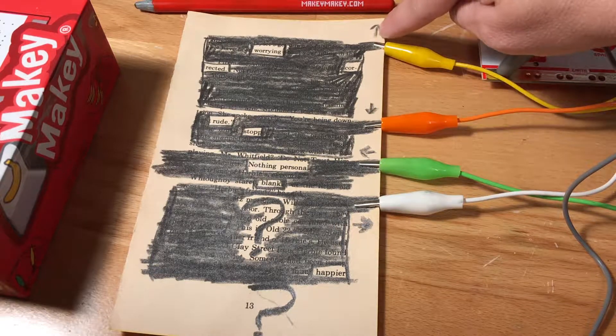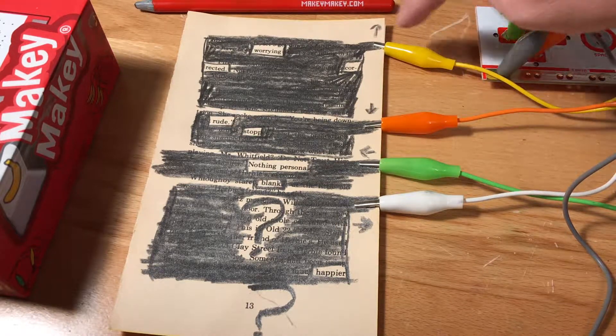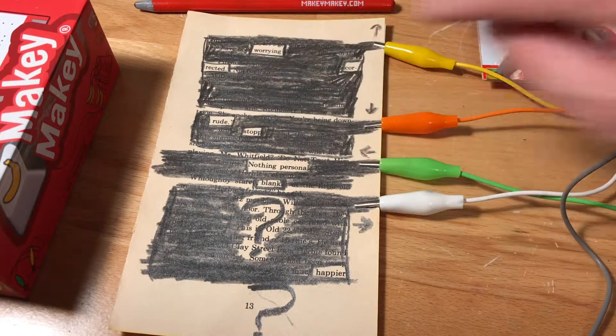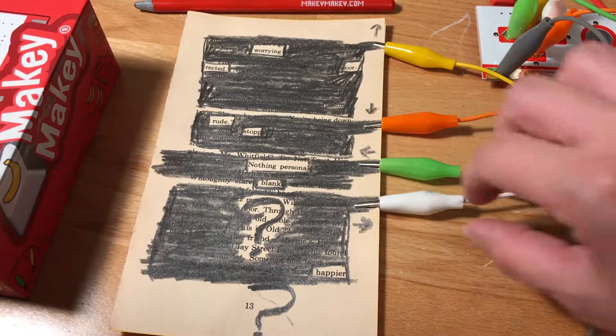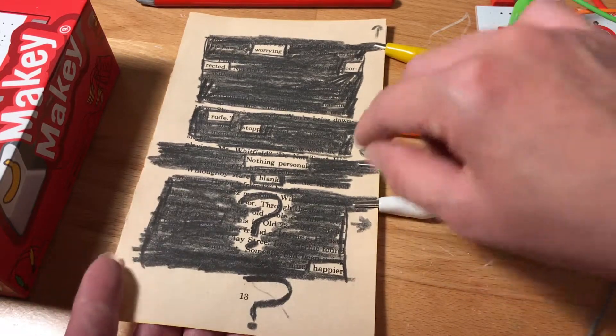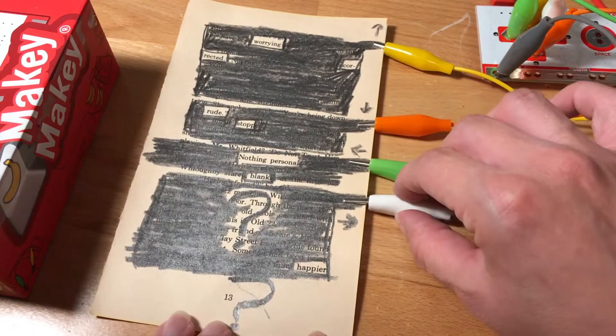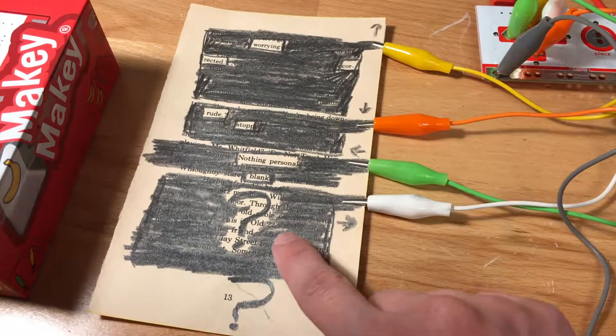A lot of times it helps to put the signal that you're going to be using as the key input. So like this first one's just going to do up and this is going to do down. And also since I'm using an old book, I use an index card on the back to kind of give the alligator clip something to clip to. And I'm just going to clip directly onto the paper.